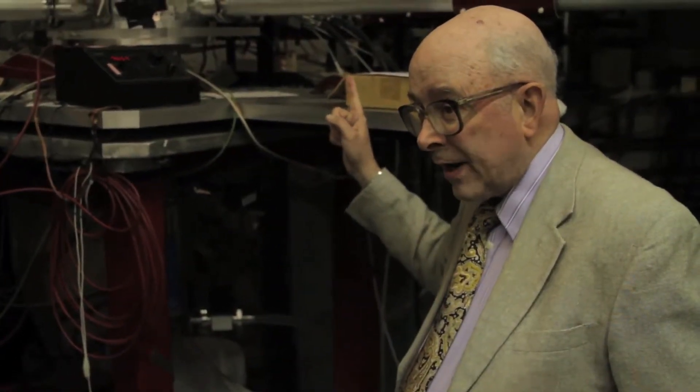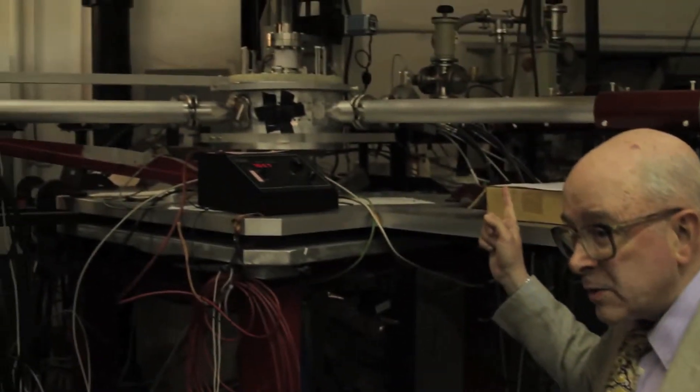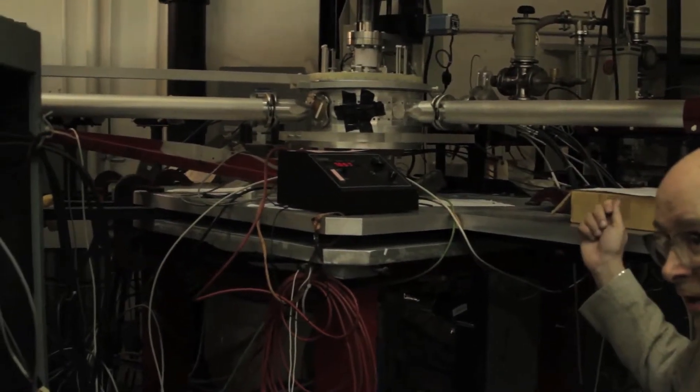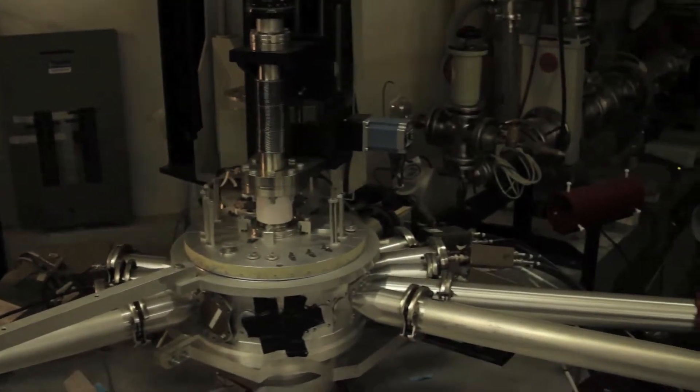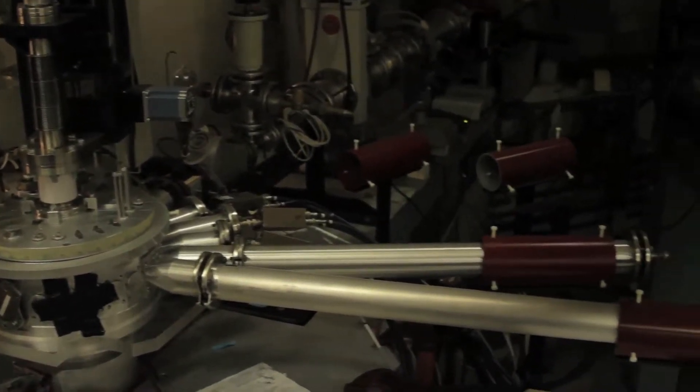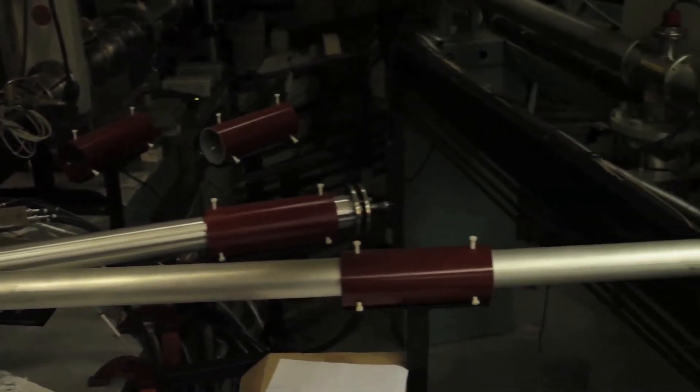This is our last experimental area. We can use the beam which is produced by the accelerator. We steer it into this assembly right here, which is a so-called reaction chamber, and then we measure the particles that are produced when the beam coming from the accelerator strikes a foil.